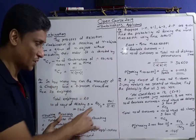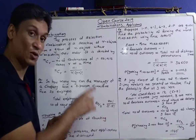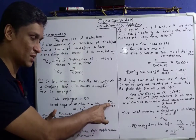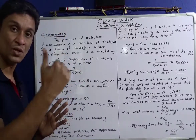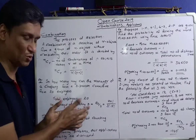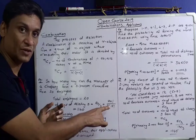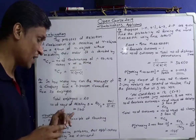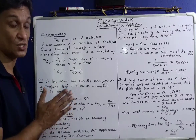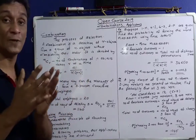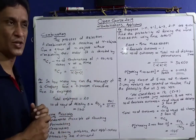Now let's simplify this. You can use a calculator for the factorial. 20 factorial divided by 17 factorial — simplify this step by step to get the final value.